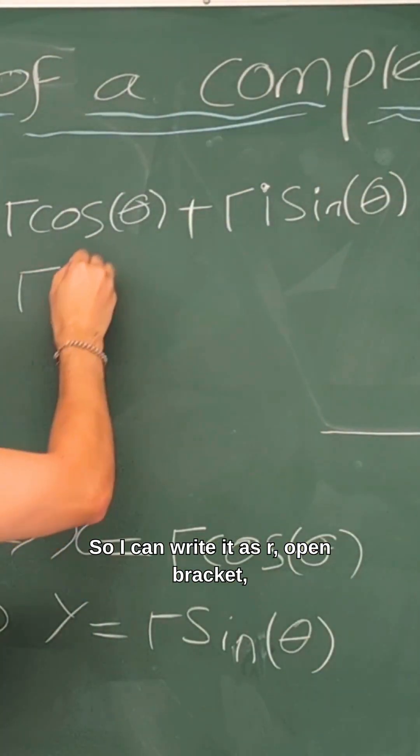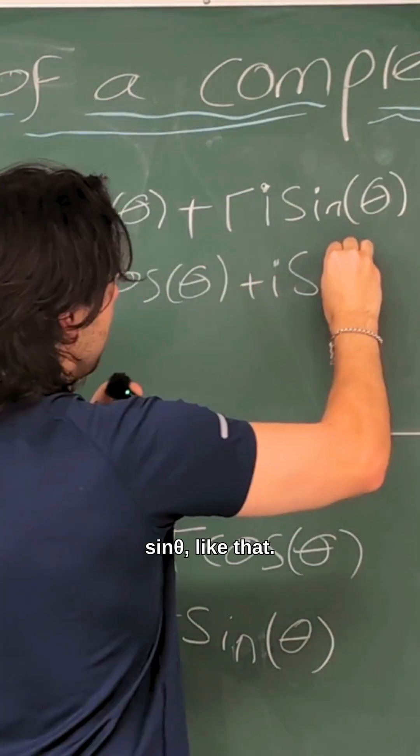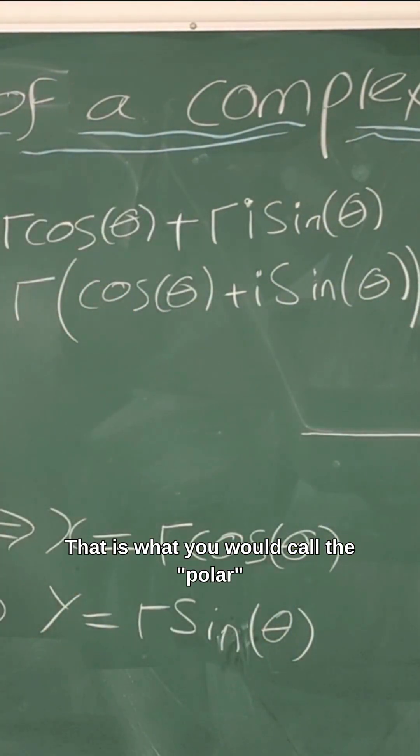So I can write it as r open bracket cos theta plus i sine theta, like that, and then close the bracket. That is what you would call the polar form or the modulus argument form of the number x plus i y.